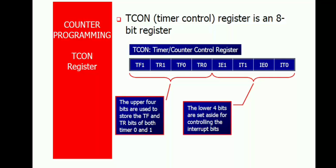The Timer Control register (TCON) controls the interrupt signals and turn-on and turn-off conditions of timers. The lower 4 bits are used to control the interrupt bits and upper 4 bits are used to control the interrupt signals, to start and stop operations of timers. To start and stop operations, the TR0 and TR1 bits are used. And to indicate the overflow condition, TF0 and TF1 bits are used.